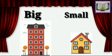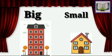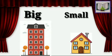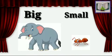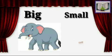Here is the building and house, where the building is the big object and the house is a small object. Here is the elephant and ant, where the elephant is a big animal and the ant is the small animal.